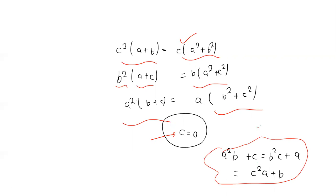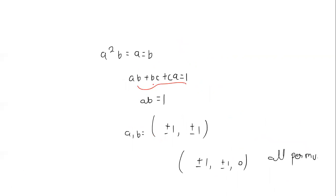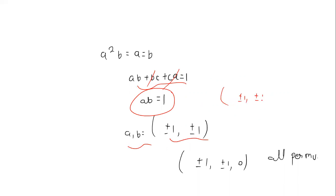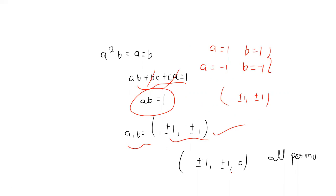When C equals 0 and A squared times B gives A equals B. So A equals 1 and A equals 1, giving solutions. Also A equals 1 and A equals minus 1. And with C equals 0 and A equals 0, we examine those cases as well.